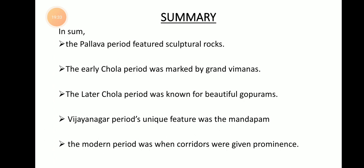In summary: the Pallava period is prominent for its sculptural rock temples; the Early Chola period is famous for its grand Vimanas; the Later Chola period is famous for its beautiful Gopurams; the Vijayanagara period is important for its Mandapam style; and the modern period is famous for its corridors. With that, Lesson 2 of History is completed. We will meet in the next class.